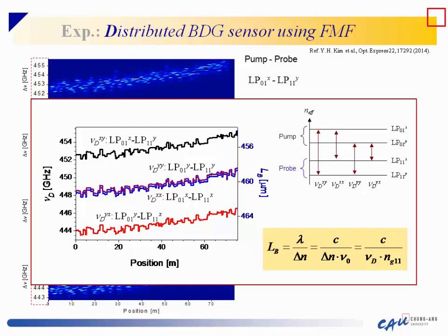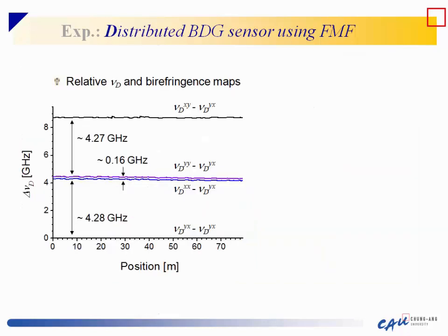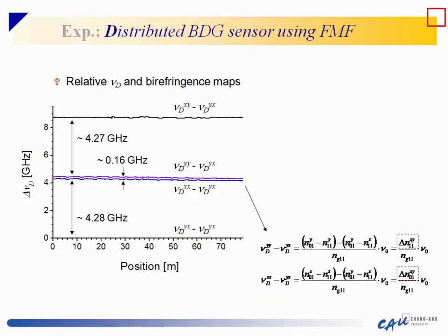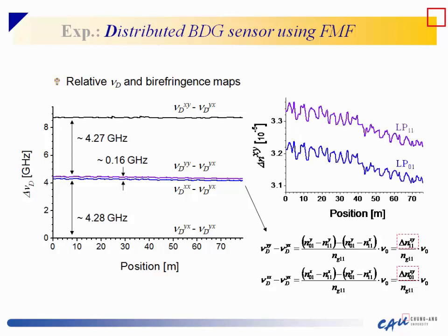From the beat lengths, we can calculate delta N — the index difference between different optical modes. By subtracting BDG frequency maps for different mode pair combinations, we obtain the pure BDG frequency for each individual mode. The result shows LP11 mode birefringence is larger than LP01 mode birefringence, and both change in a similar manner along the fiber.